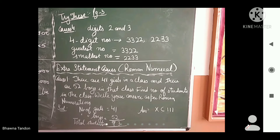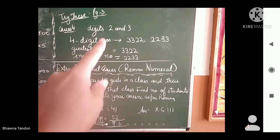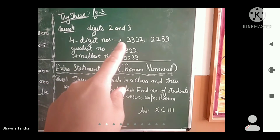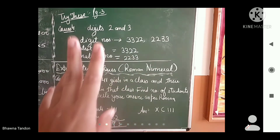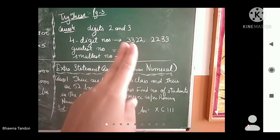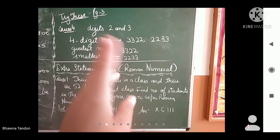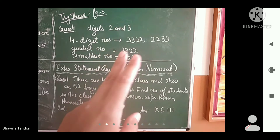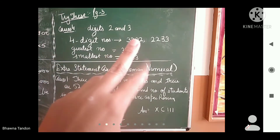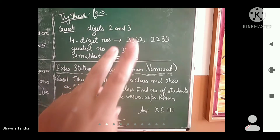Both digits must be used an equal number of times. Equal number of times means if you use the digits, they should be used equally — not one digit two times and another three times or one time. You have to use them an equal number of times.